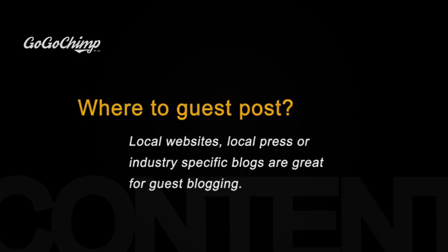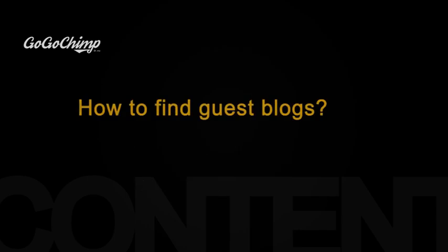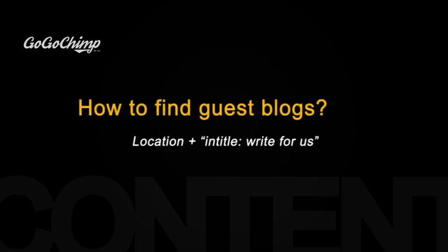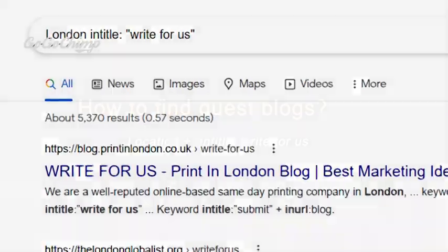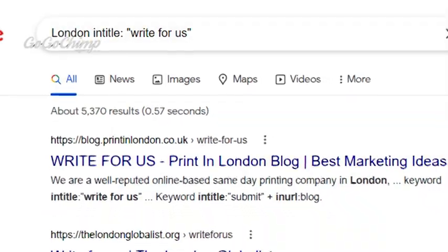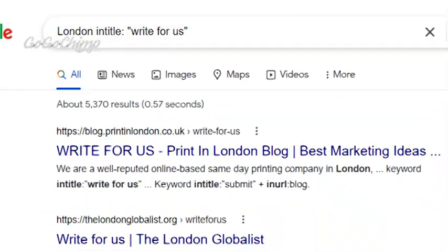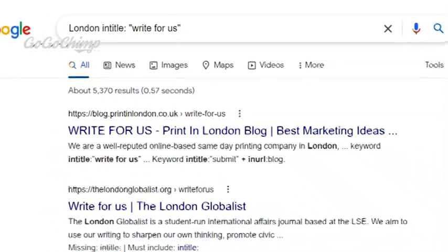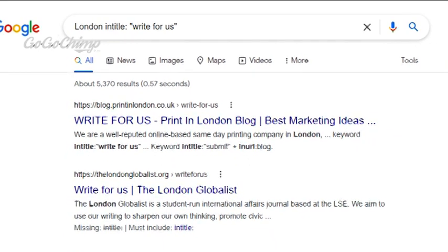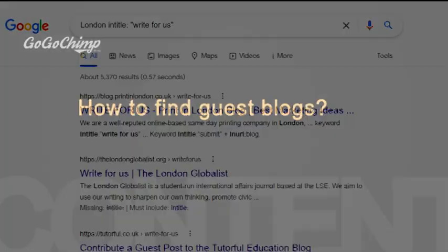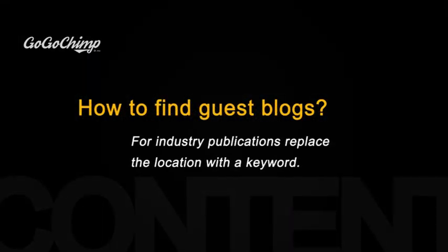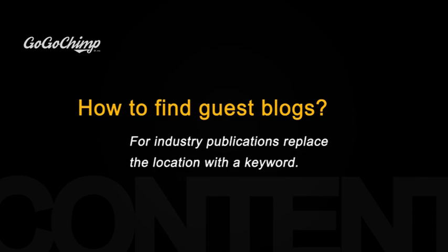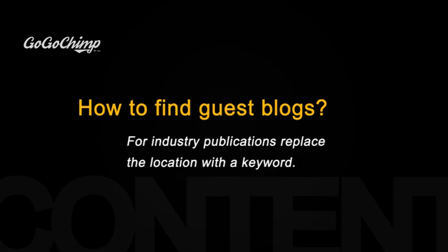Finding local blogs is as simple as Googling things like location and title, then 'write for us.' Here's what it might look like for a business based in London. You can also do the same thing to find industry publications — just replace the location with the keyword, for example, plumbing or massage, instead of London.